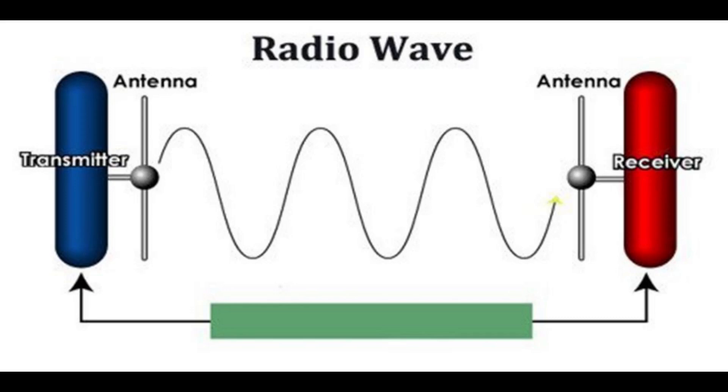At the receiver, the oscillating electric and magnetic fields of the incoming radio wave push the electrons in the receiving antenna back and forth, creating a tiny oscillating voltage which is a weaker replica of the current in the transmitting antenna. This voltage is applied to the radio receiver.